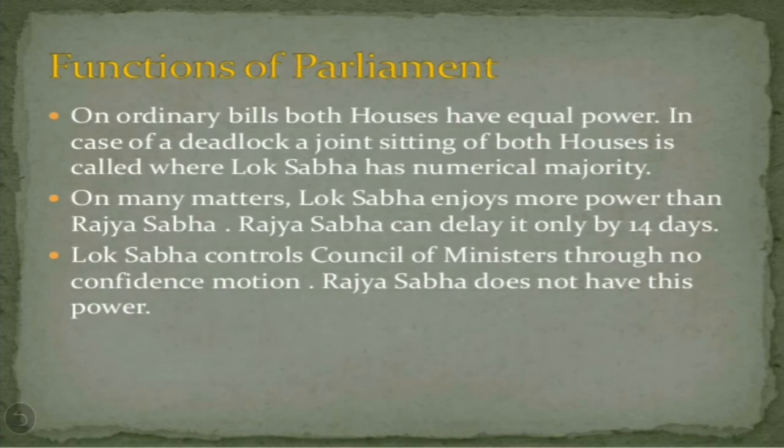Now come the functions of parliament. On ordinary bills, both houses have equal power. In case of a deadlock — any dispute — a joint meeting of both houses is called, where Lok Sabha has numerical majority. On any matters, Lok Sabha enjoys more power than Rajya Sabha, but Rajya Sabha can delay only by 14 days. Lok Sabha controls the council of ministers through a no-confidence motion, but Rajya Sabha does not have this power.